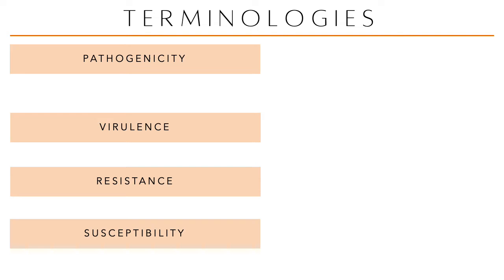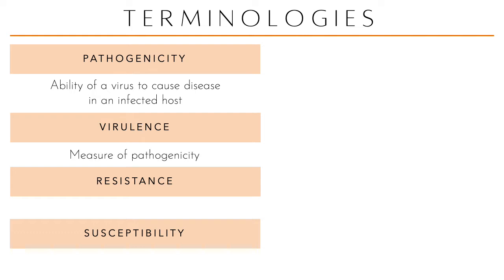Pathogenicity, virulence, resistance, and susceptibility — these are not new to you. Pathogenicity is the ability of a virus to cause disease in an infected host. We have repeated time and again that infection does not equate to clinical disease. Virulence is the measure of pathogenicity. Host resistance is the ability to resist infection, while viral resistance refers to the ability of the virus to resist being destroyed by external stimuli, pH changes, or environmental changes.